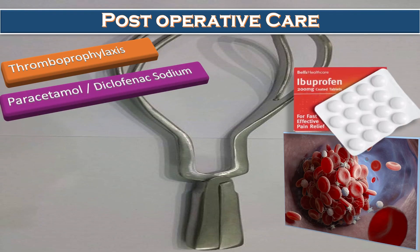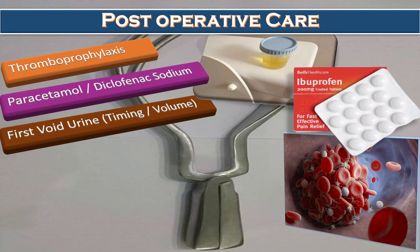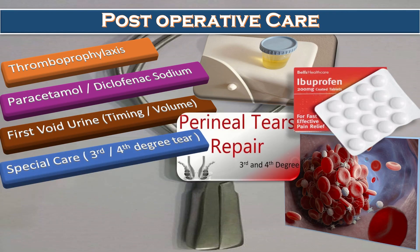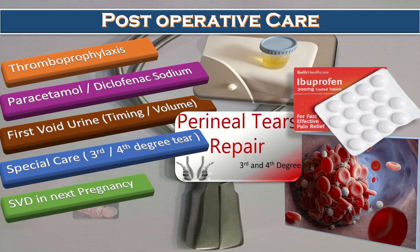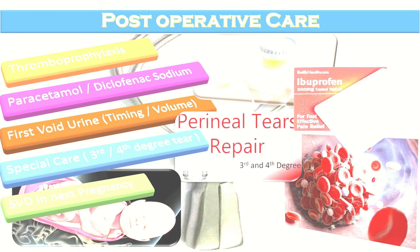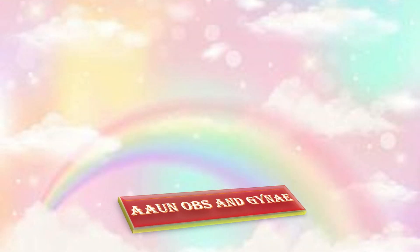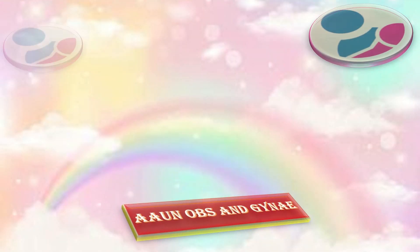For postoperative care, I will provide thromboprophylaxis, regular paracetamol or diclofenac for pain relief. The timing and volume of the first void urine should be monitored. Special care should be given to those who sustain third and fourth degree perineal tears. I will encourage spontaneous vaginal delivery in the next pregnancy.